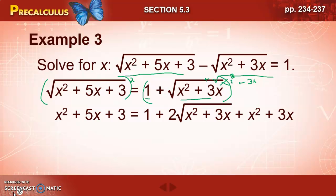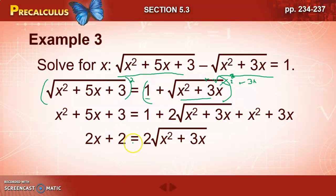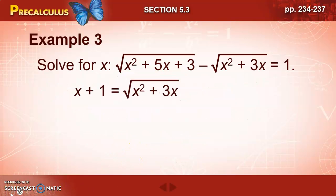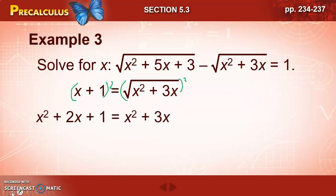From here we simplify and then isolate the remaining radical — we have to repeat the process. The radical is being multiplied by 2, so we first divide both sides by 2, giving us x plus 1 equals the square root of x² plus 3x. Then we raise the radical to the power of the index — index is 2 — squaring both sides. We multiply the binomial and get x² plus 2x plus 1 equals x² plus 3x.